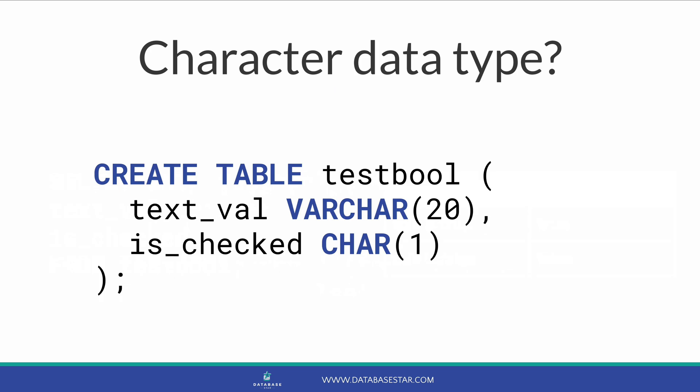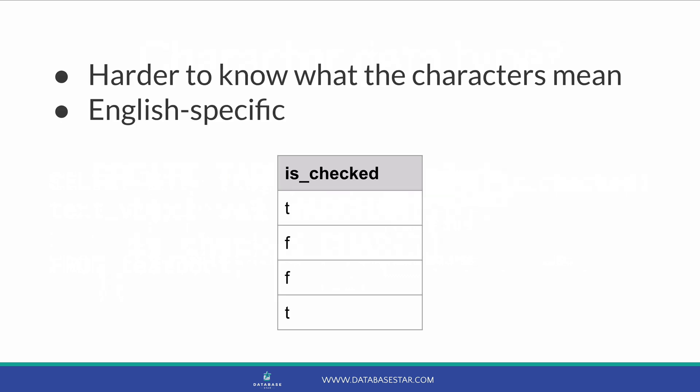You might be wondering if we can just use a character data type instead of a number. The answer is you could — you could use a varchar field or varchar2 in Oracle, or even a char field to store a single character value of true or false. This could work, but I don't recommend it for two reasons. One, it's a little harder to know what the characters mean. If you put T or F for true or false, it may not be immediately obvious, especially if you see the value in another query or in an application. Another reason is that T and F are English specific — for non-English languages and people, T and F may not be obvious. The same thing can be said for Y or N as yes or no. That's why I recommend using Boolean where you can, like in PostgreSQL, or using a single digit number or bit values for Boolean.